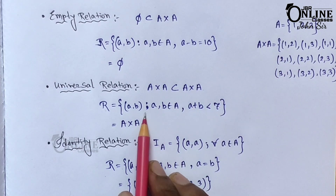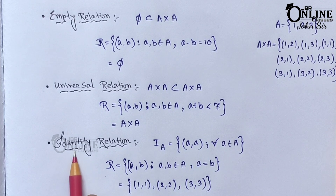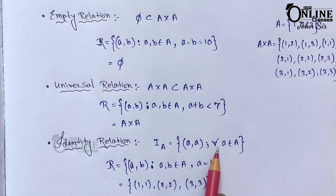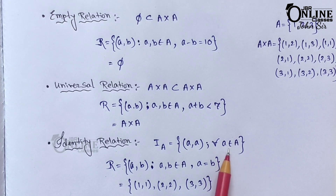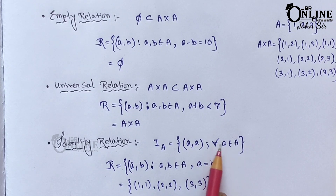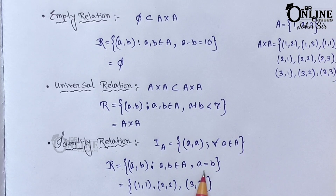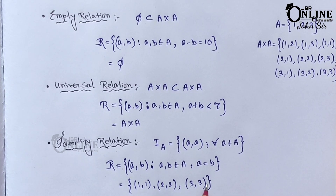The third particular relation is the identity relation. Identity relation means {(a, a) : for all a ∈ A}. Remember: in the identity relation, every element is related to itself, meaning a = b always. So with A = {1, 2, 3}, the identity relation is {(1,1), (2,2), (3,3)}.